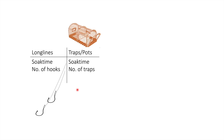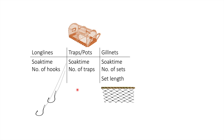Similarly, trap fisheries tend to also divide by either the number of pots set and/or the duration. Soak time is used again for gillnet fisheries, but if the type or way of setting the nets varies a lot between fishers, then the area or size of each net and also the number of sets might also be included.